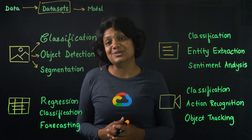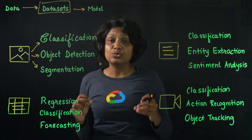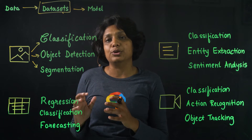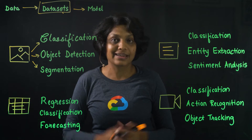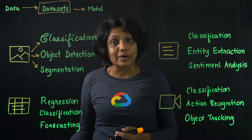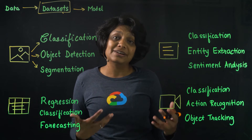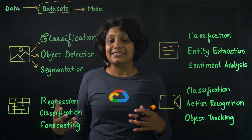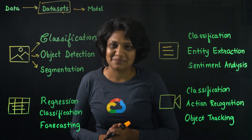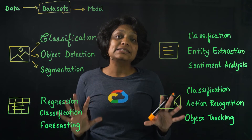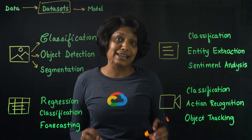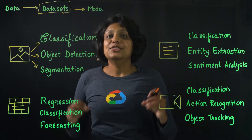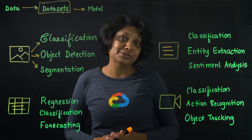To ensure your model performs well in production and there's no training-serving skew, make sure the training images are close to the input your users will send to your deployed model. For example, if your images are going to be low resolution, be sure to include blurry, low-resolution images. Include multiple angles, backgrounds, and all sorts of resolutions. It's recommended that you include at least 1,000 images per label, but you can get started with 10 per label. The more examples you provide, the better your model will be.